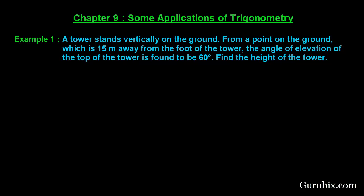First of all, let us draw a rough sketch of the figure using the information given in the question. We are told a tower stands vertically on the ground. Suppose this is the ground and here we have a tower which stands vertically, making an angle of 90 degrees with the ground. From a point on the ground which is 15 meters away from the foot of the tower, suppose we have this point that is 15 meters away from the foot.